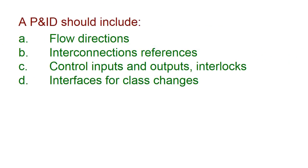A piping and instrumentation diagram should include: A) flow directions, B) interconnections references, C) control inputs and outputs, interlocks, etc., and D) interfaces for class changes.